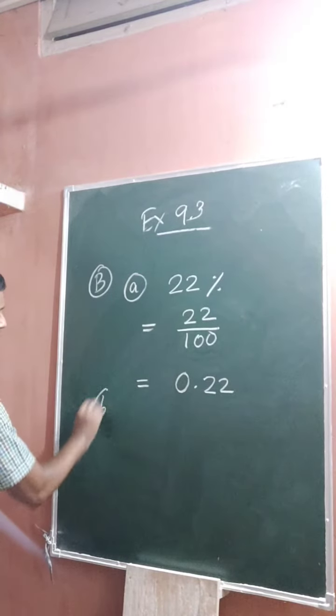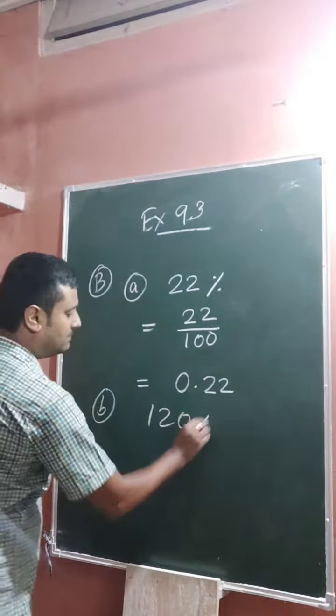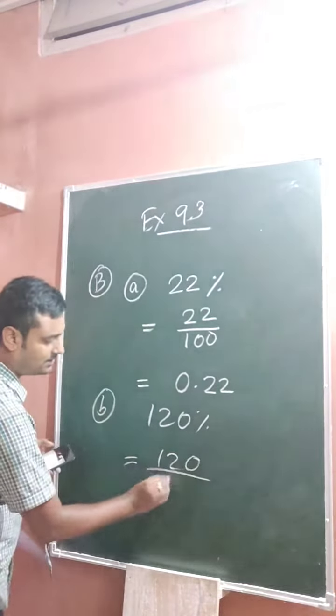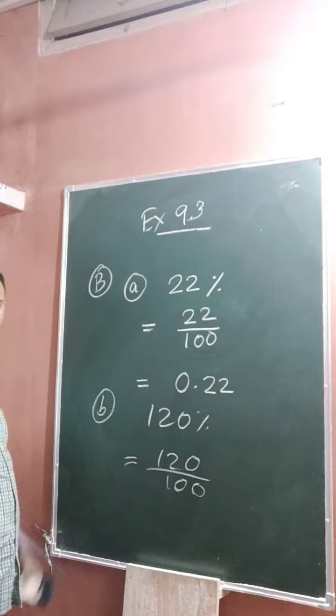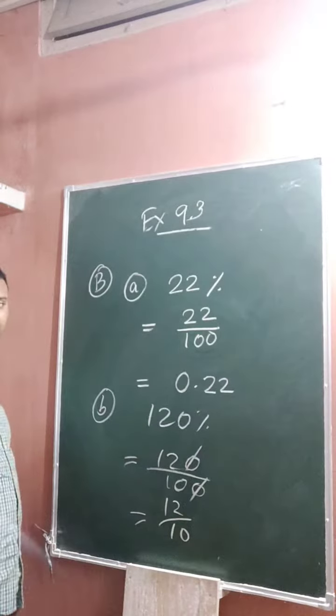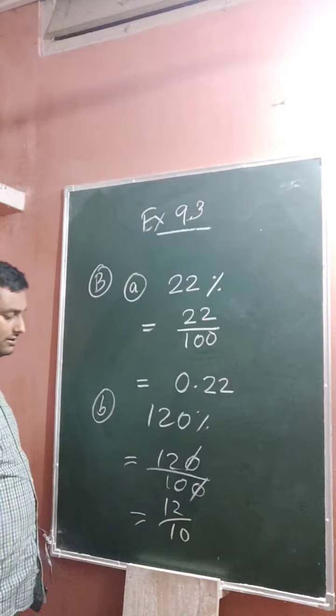Now question number B: 120 percent. That goes 120 by 100. You can cancel this zero, that means 12 by 10. How many zeros here? One. So after the decimal there must be one digit.